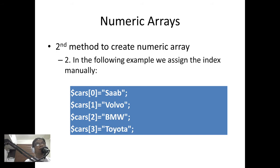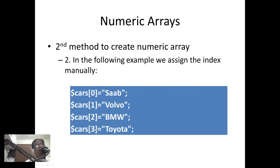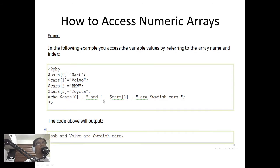Here's another method of creating a numeric array. This time we assign the index manually. In the previous example, the index is assigned automatically, but in this case we assign it manually. So we have the variable name '$cars' and then square bracket zero — that's the index — assigned to its value. For example: cars[0] = 'Saab', cars[1] = 'Volvo', and so on. This is another method of creating numeric arrays.